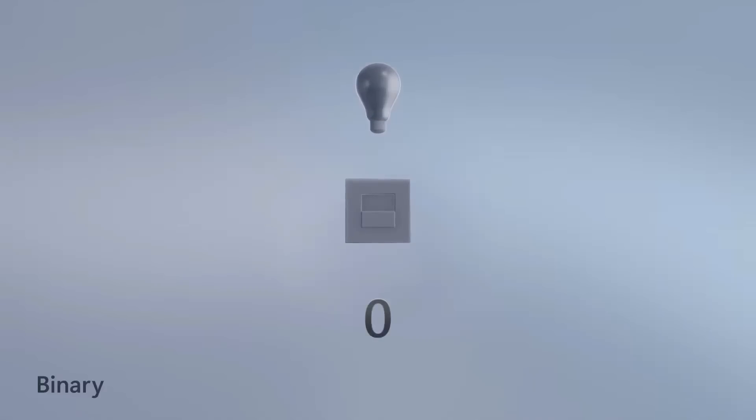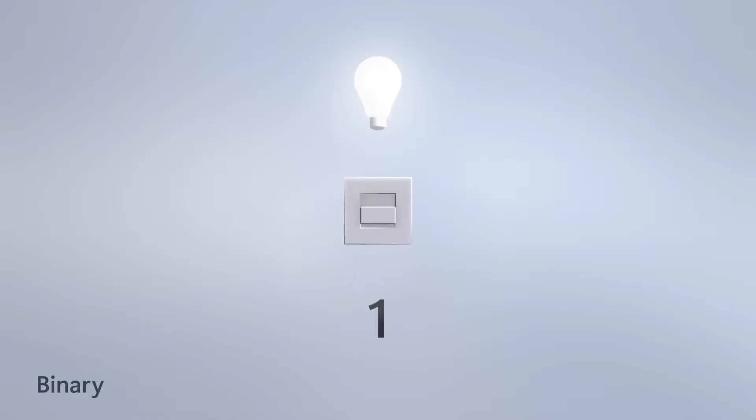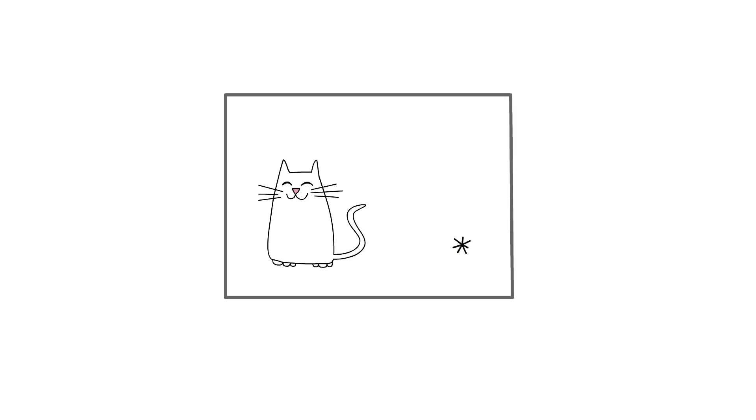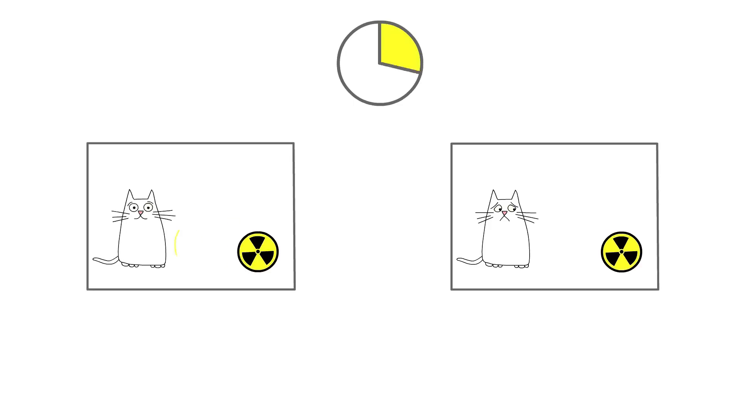Unlike classical bits, which are strictly zero or one, qubits can exist in a state of superposition, meaning they can be both zero and one simultaneously. Think of Schrodinger's cat, which is both alive and dead until observed.